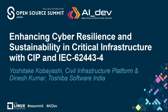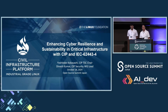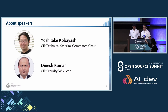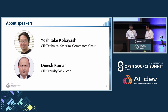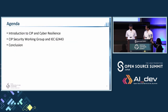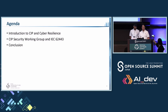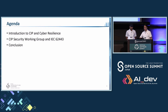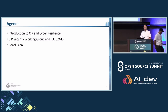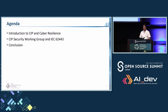Welcome everyone. Today we are going to discuss enhancing cyber resilience with CIP and IEC 62443-4. My name is Yoshitake Kobayashi, CIP Technical Steering Committee Chair, and he is Dinesh Kumar, from the security working group for CIP projects. We'll start with an introduction of CIP and explore how CIP enhances cyber resilience. We also take a look into the CIP security working group and its alignment with IEC 62443 standards. By the end of this session, I hope you have a clear idea of how CIP enhances and improves cyber resilience for your systems.